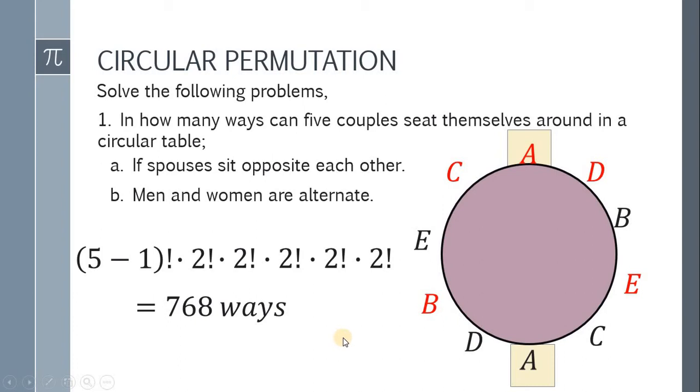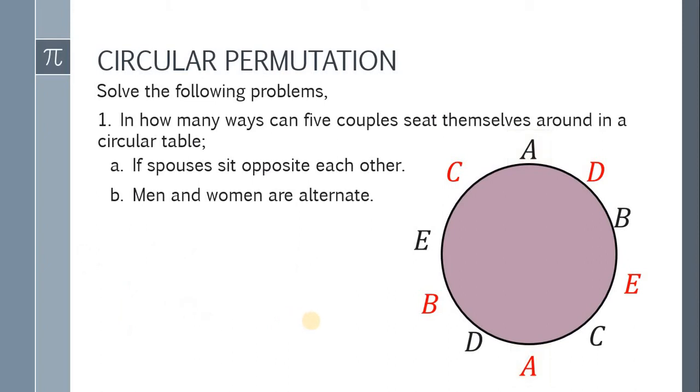And letter A, we're done. Now let's move on to letter B. Men and women are alternate. Simple lang, yung kulay black na letter, ito yung mga men. And yung kulay red, sila yung mga women. Ang tendency, i-arrange muna natin yung mga men. Fix natin yung isa.